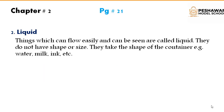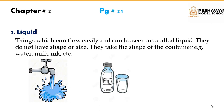Next is liquid. Things which can flow easily and can be seen are called liquids. But they do not have shape or size — they take the shape of the container. For example, water, milk, ink, etc.